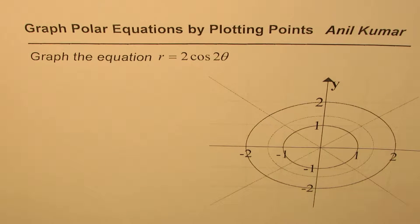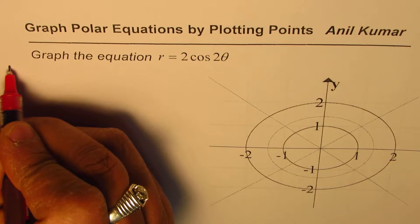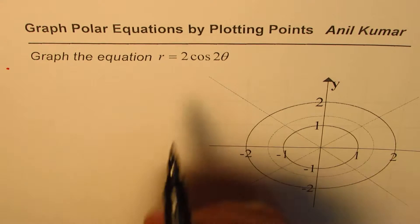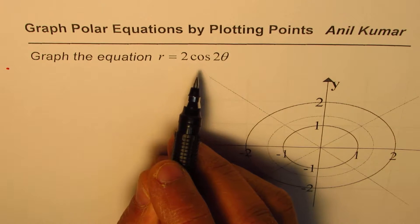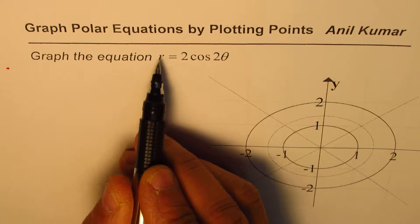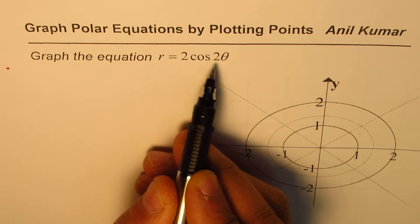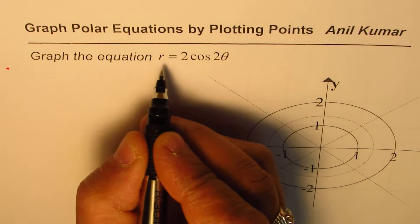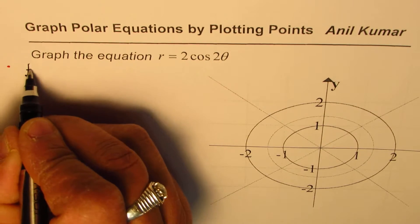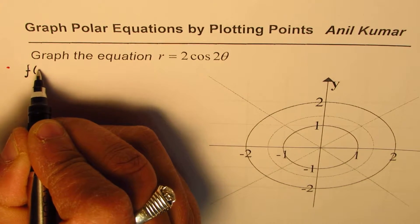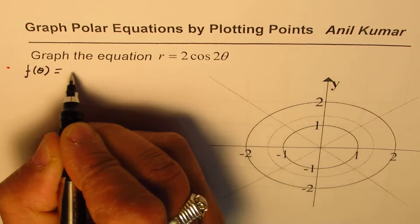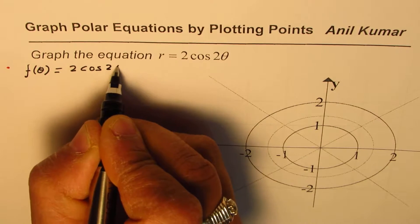Before graphing, we should always check the symmetry. Checking symmetry helps us identify what kind of points we should take to sketch the graph of the given function. What we have here is r equals 2 cosine 2θ, so let us check the symmetry. We define f(θ) = 2 cos 2θ.